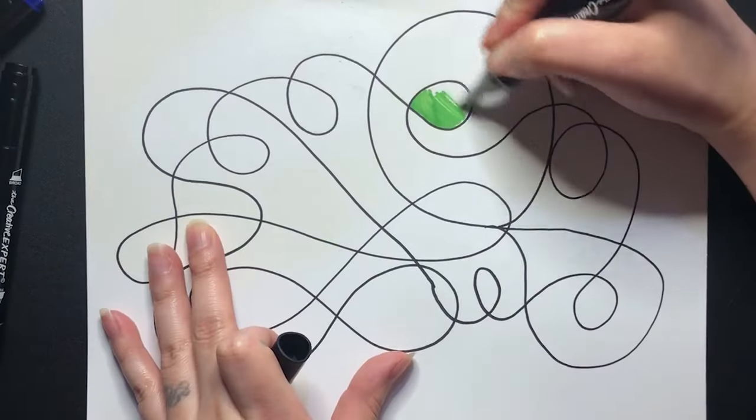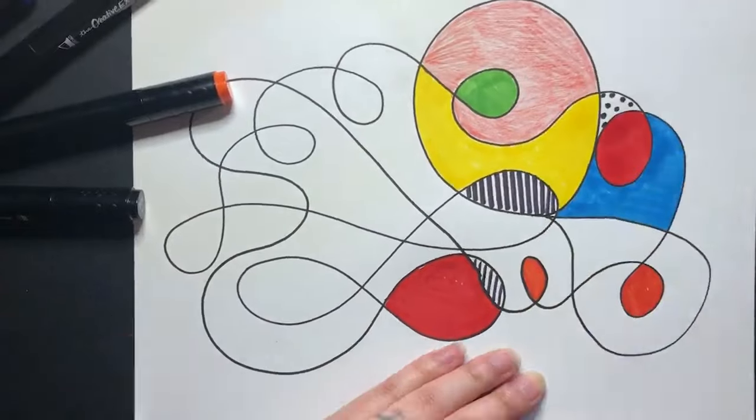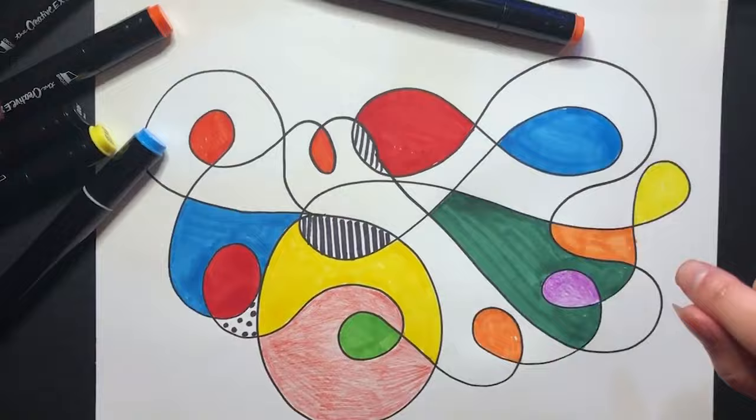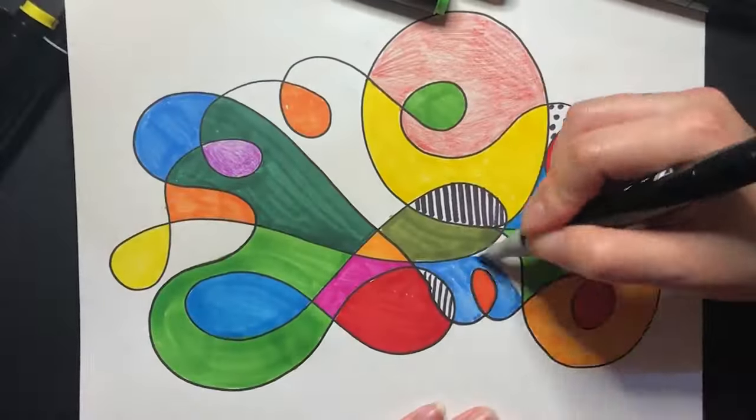Next, you'll color in the blank spaces that were created by the squiggles. Each space should be a different color. You can leave some spaces white or add tiny design patterns using lines or dots.